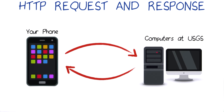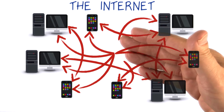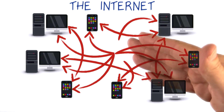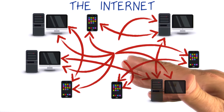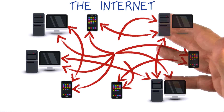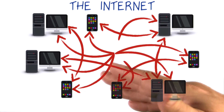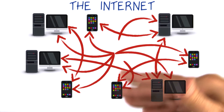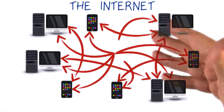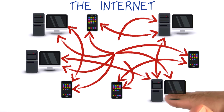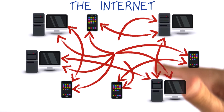A network is really just two or more computers connected in some way that lets them communicate. And when I say computer, I mean any computing device like a phone, laptop, or a server. The internet is a large-scale network consisting of many computers around the world, and we can use the HTTP protocol to route our request from one computer to the other.